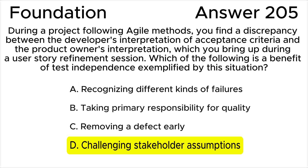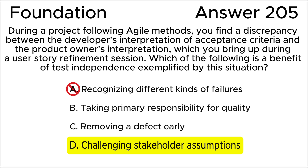Answer A is incorrect. While recognizing different kinds of failures is a benefit of tester independence, in this scenario no code yet exists that can fail. The problem is that the developer and product owner are assuming different things about the acceptance criteria.